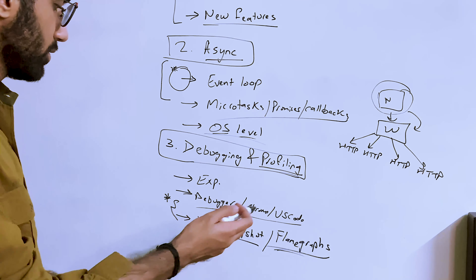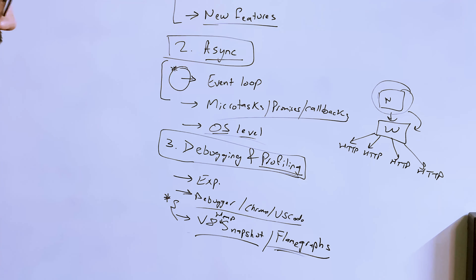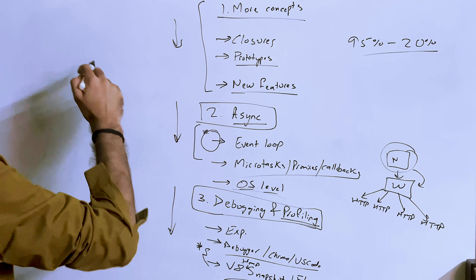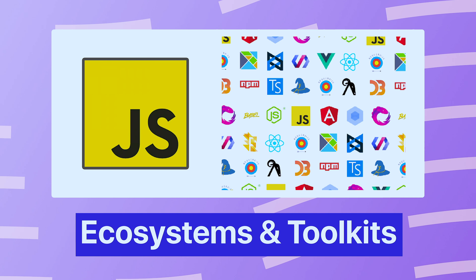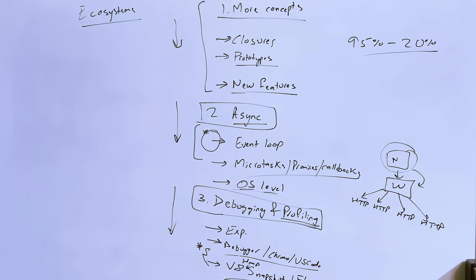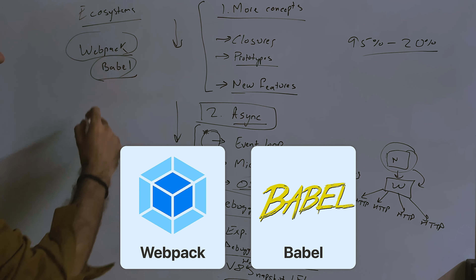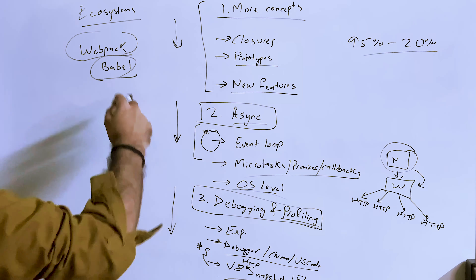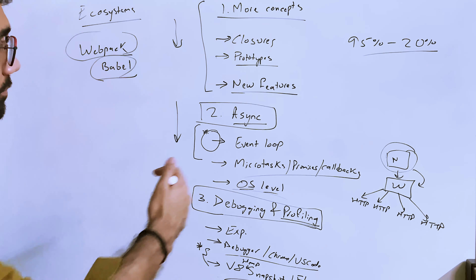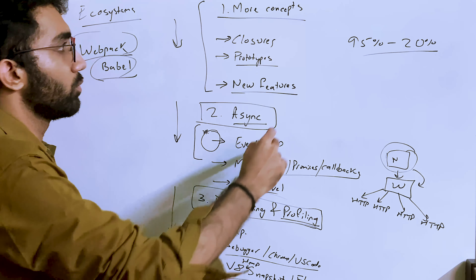Two tools I've found for profiling are memory leak detection and CPU execution analysis using tools like heap snapshots and flame graphs. Beyond profiling, you should also be aware of the general ecosystem and tooling — debuggers, logic and debugging practices, and tools like webpack and Babel. Babel is for transpiling, webpack is for bundling — that's pretty much it. If you know that, you can figure out the rest of the ecosystem relatively quickly.